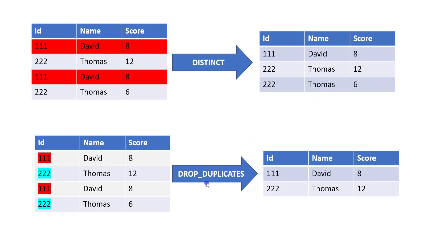With drop duplicates, we can give a subset of columns. If we specify subset as id and name, it will consider only those two columns for duplicate identification. Both 111 David pairs and 222 Thomas pairs are treated as duplicates, so only one record each is returned. Importantly, all columns including score are retained in the result — but when multiple values exist for the non-subset column, one value is picked randomly based on data partitioning.